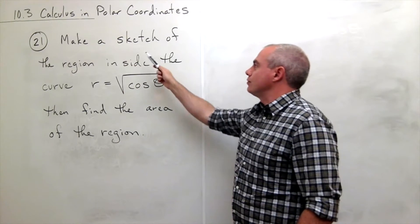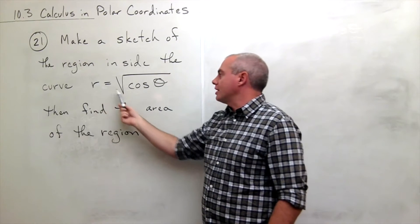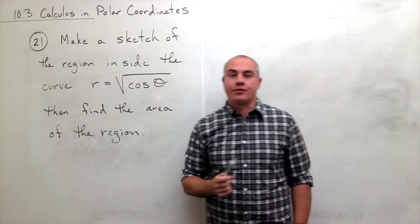21, that asks us to make a sketch of the region inside the curve r equals square root of cosine theta, and then find the area of the region.